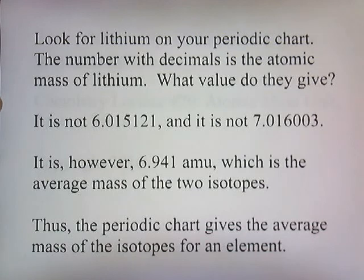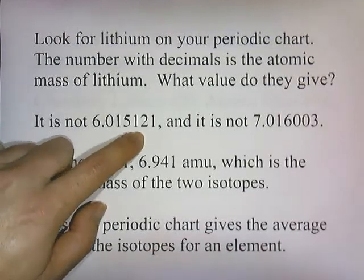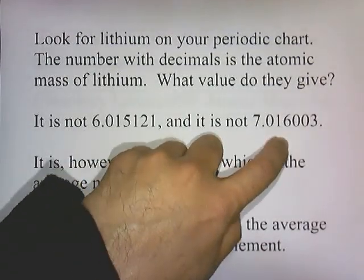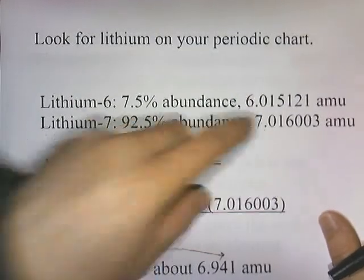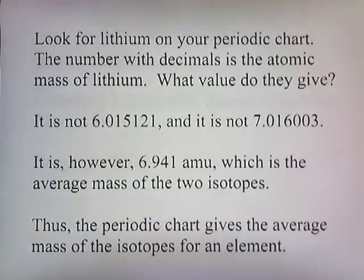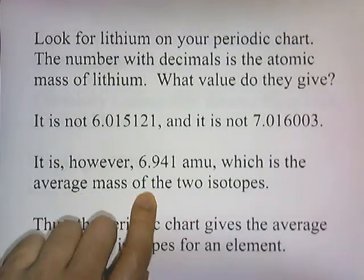And what is the atomic mass of lithium that you find? Well, it's not 6.015121, it's not 7.06003. Those were the masses of the two different isotopes. But what you do find is 6.941 atomic mass units, which is the average mass of the two isotopes.